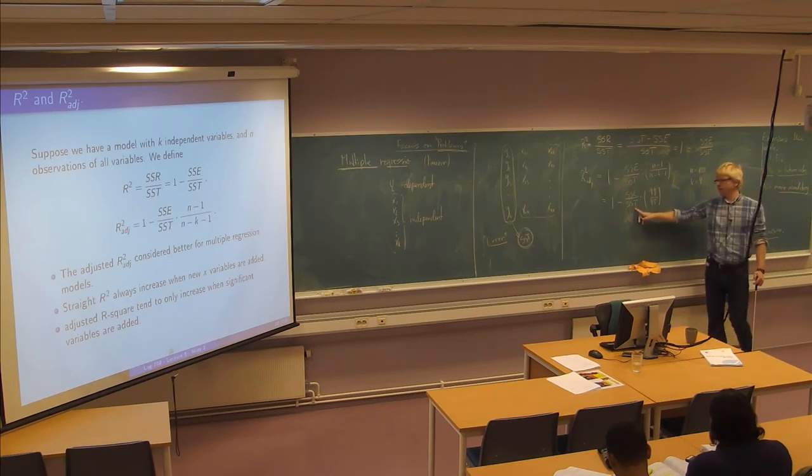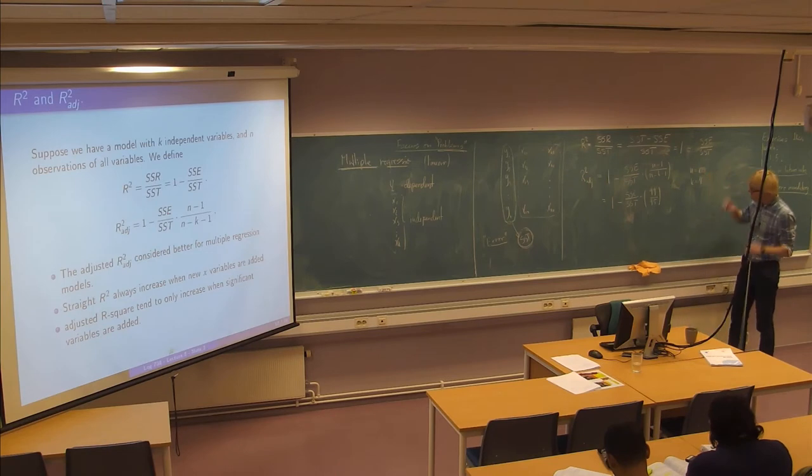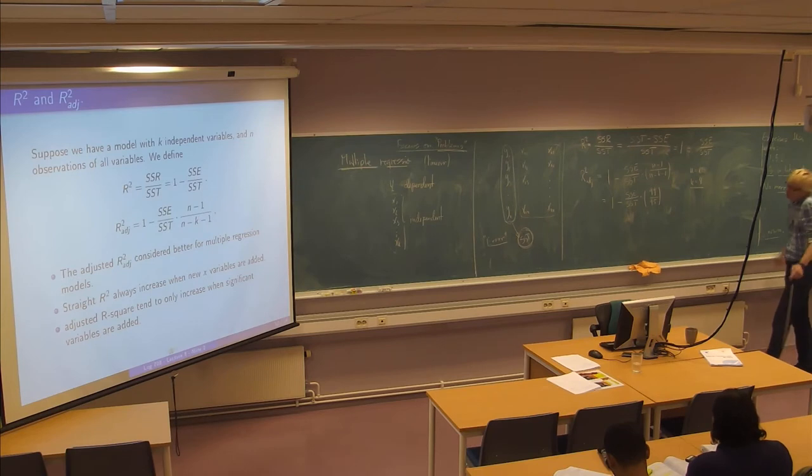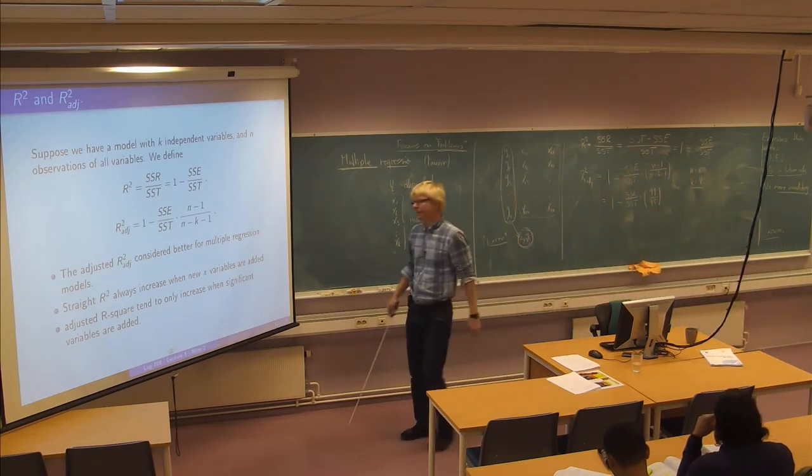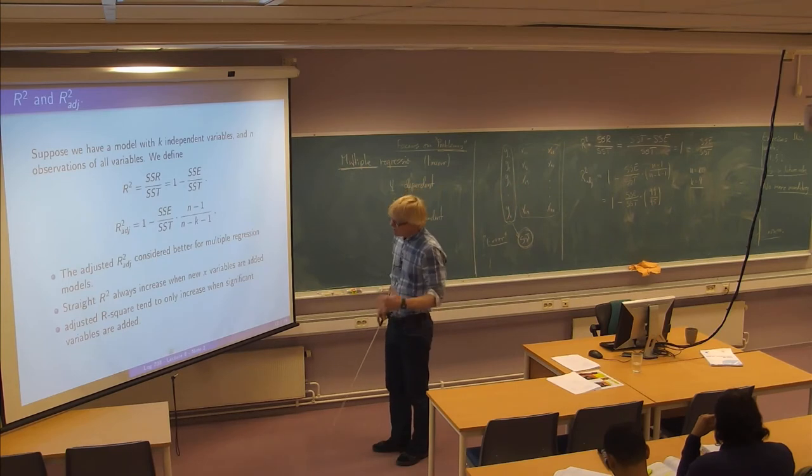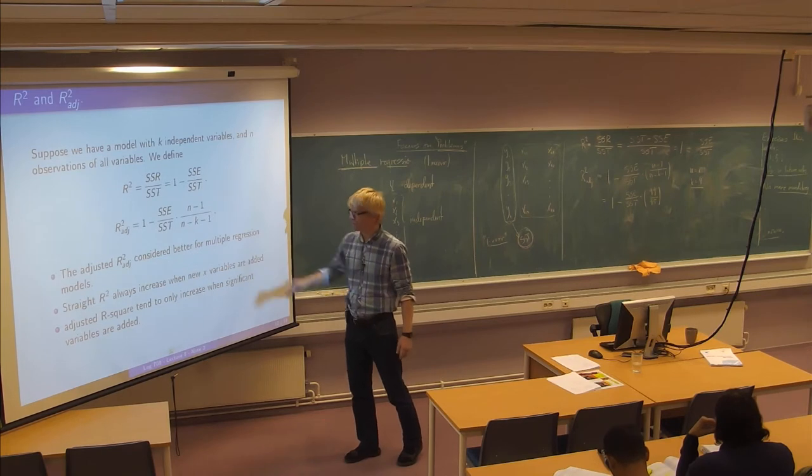The R square adjusted is just a slight variant actually. So it just takes this form here and it tries to modify it a little bit by just multiplying here with N minus 1 over N minus K minus 1. So just for an example, if you have 100 observations and you have 4 X variables, then this will be 1 minus SSE over SST times 99 over 95.